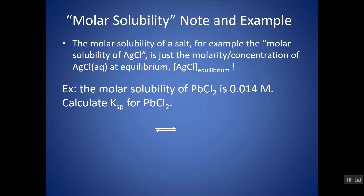A lot of problems you might see have the word solubility, or even molar solubility in them — don't let that complex wording throw you off. The molar solubility of a salt, for example the molar solubility of AgCl, is just the molarity of AgCl in aqueous solution that's present at equilibrium. So it's how much dissolved AgCl you have in your solution in molarity. They might give you the molar solubility in molarity, or it might be in grams per liter and you have to convert it to molarity first, and then ask you to calculate the KSP.